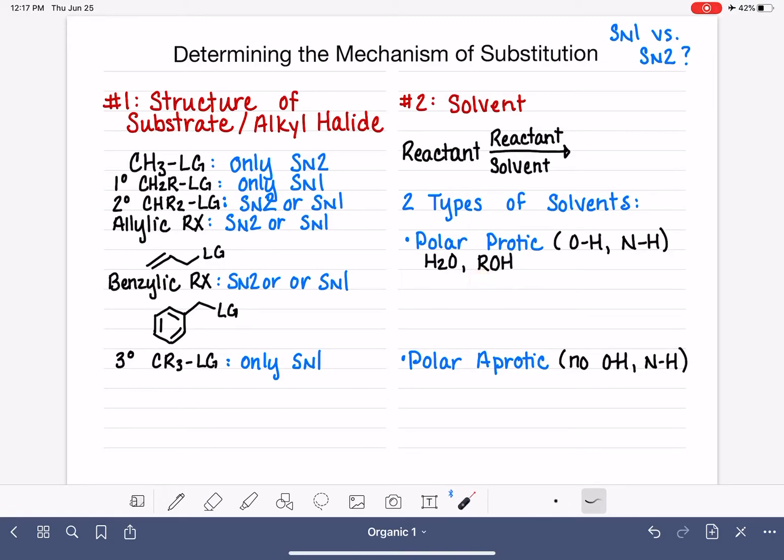The most common polar protic solvents we use in organic chemistry are water, which is just all OH bonds, alcohols, which I'm going to write as ROH because it doesn't matter what the R is. It could be CH3OH or CH3CH2OH. It has that OH bond.